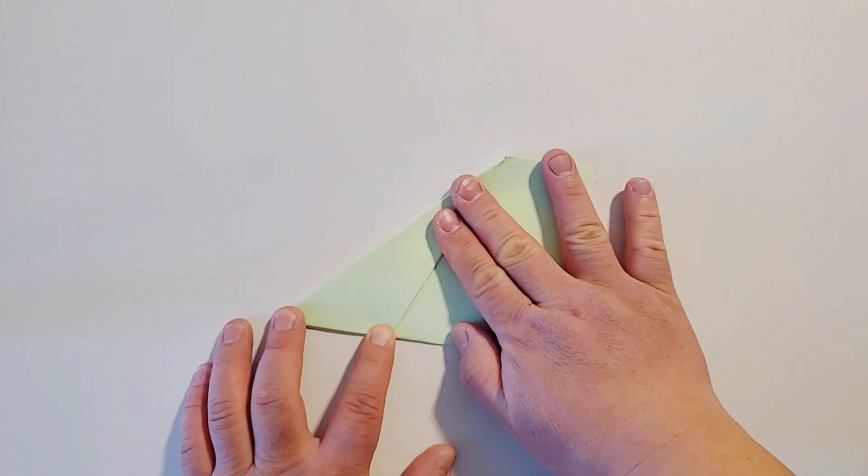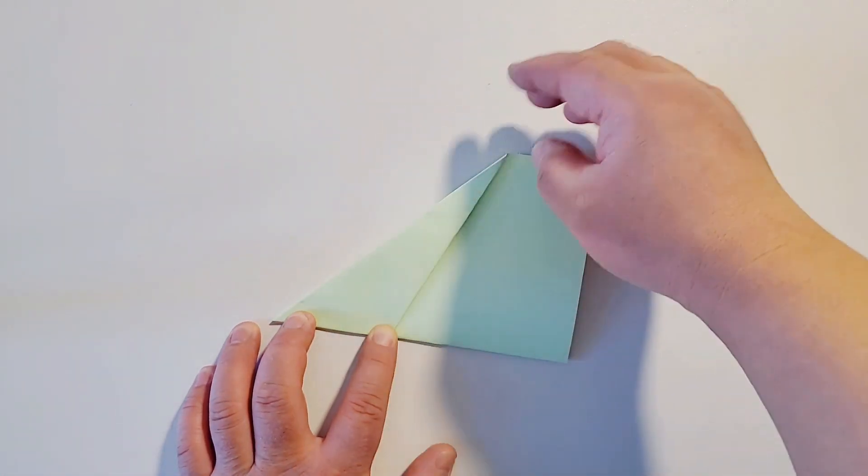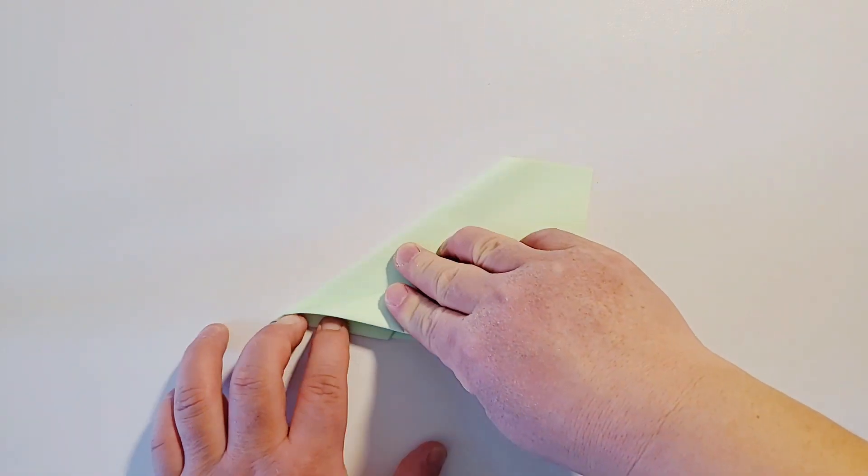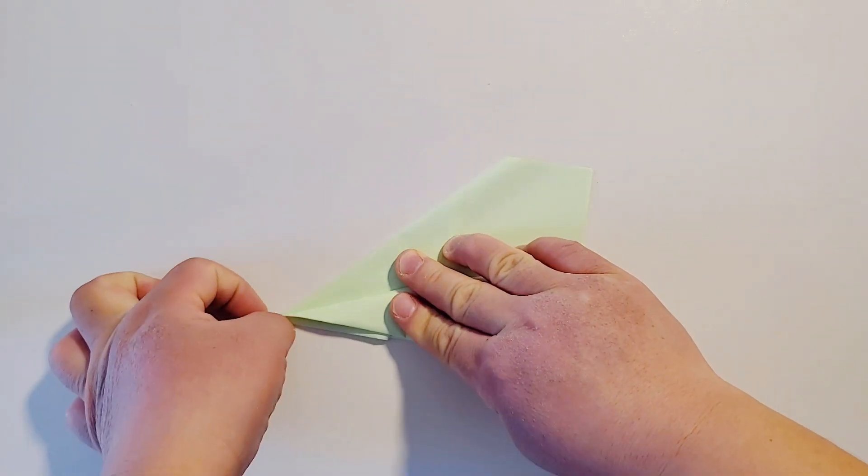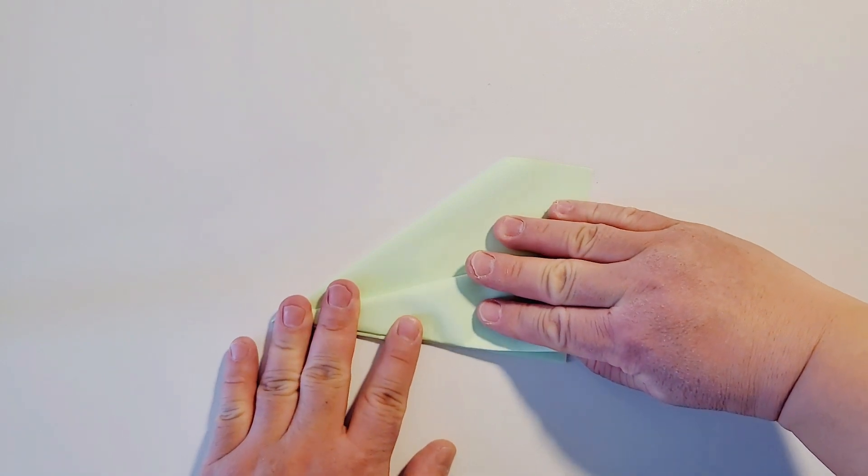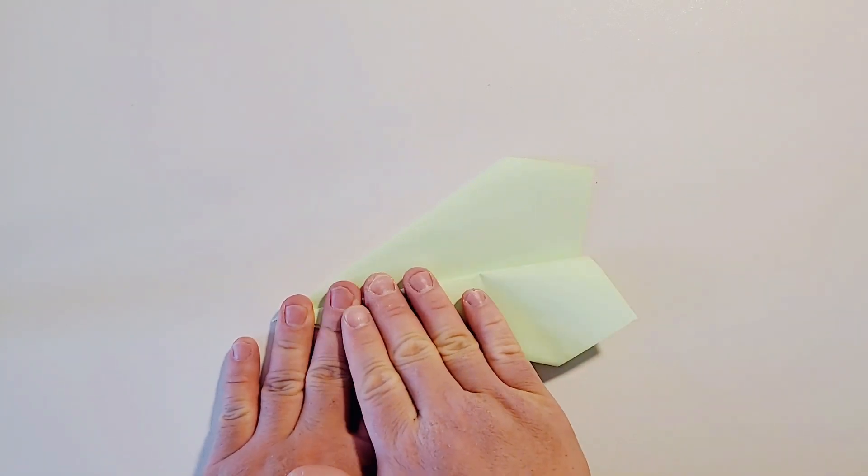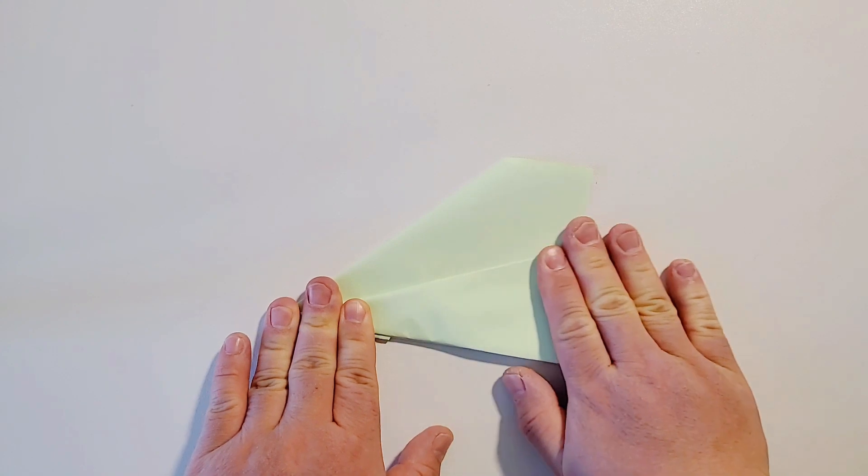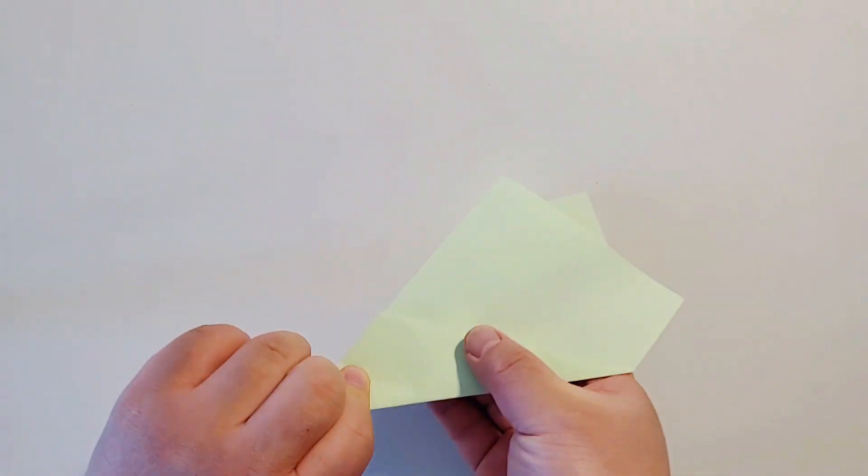And then last we will make the wings. Take the edge and fold it like this. Flip it over.